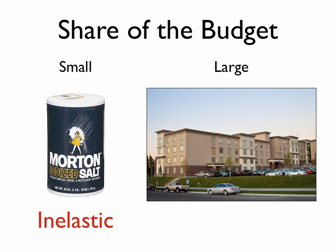On the other hand, if the price of your apartment doubled, you would notice it very much and would be looking for lots of alternatives. Therefore, large budget-share items generally tend to be much more elastic. Those are the five items that determine price elasticity of demand.